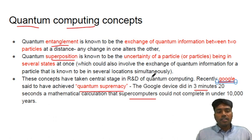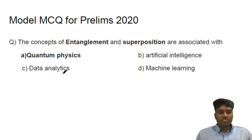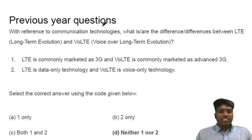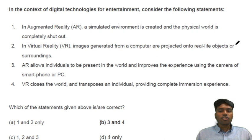Don't go much deeper into that — just understand the conceptual level and how it is implemented. The model MCQ: the concepts of entanglement and superposition are associated with quantum physics. From previous year questions, since 2019 they asked about LTE and Volta technology, and another question was about augmented reality and virtual reality. Here I will give you one tick term: these are what I call paradox statements.